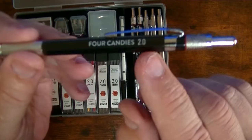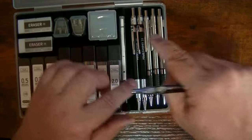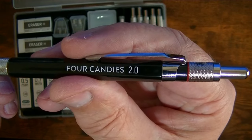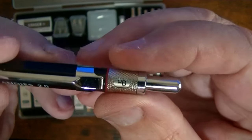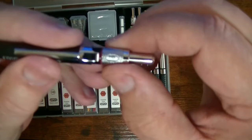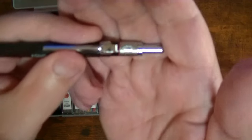So these are 2.0s and you have three of those. And as you can see here, you can set it to what kind of lead that you have inside here. It currently says HB.